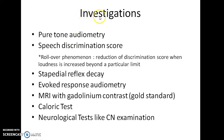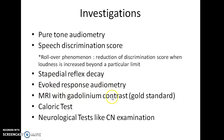Investigations in a case of acoustic neuroma include pure tone audiometry with speech discrimination score. The speech discrimination score shows a phenomenon called the rollover phenomenon, which is the deterioration of discrimination score when loudness is increased beyond a particular limit. Other investigations are stapedial reflex decay, evoked response audiometry, and MRI with gadolinium contrast, which is considered the gold standard in diagnosis. Caloric tests and neurological tests like cranial nerve examination are also performed.